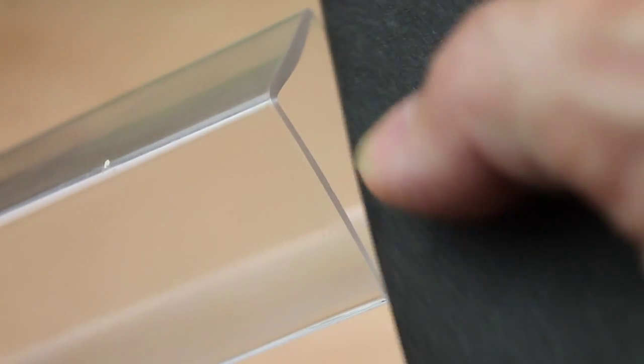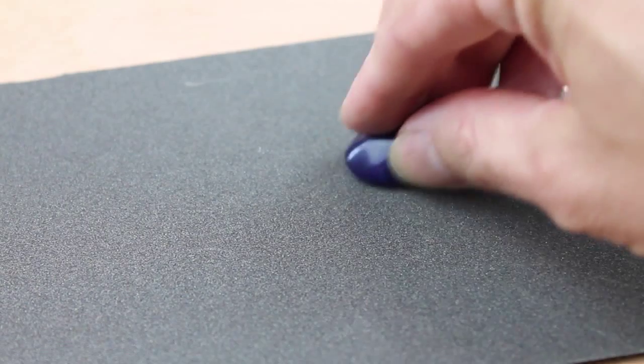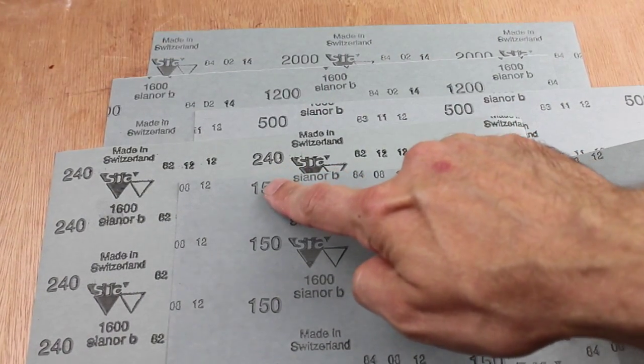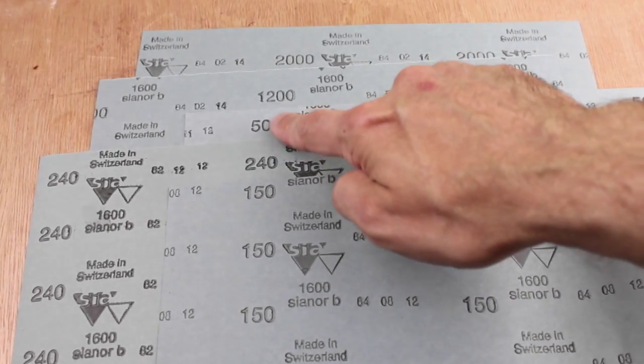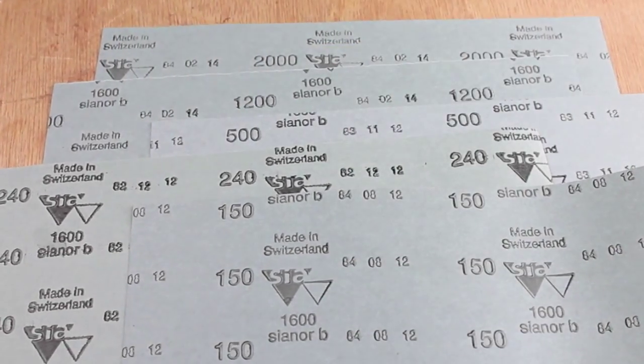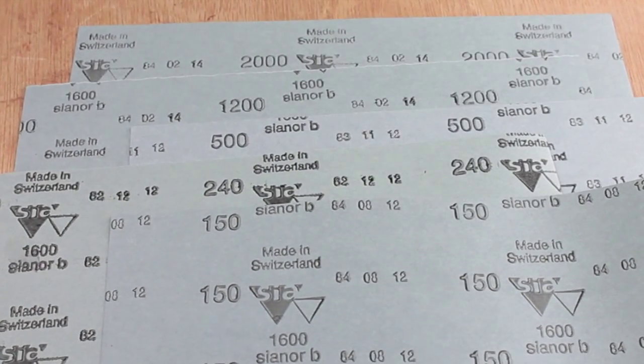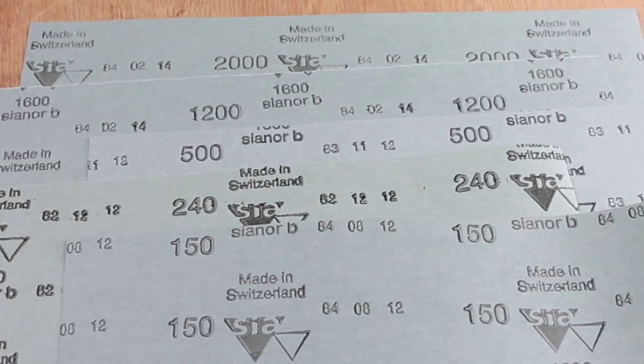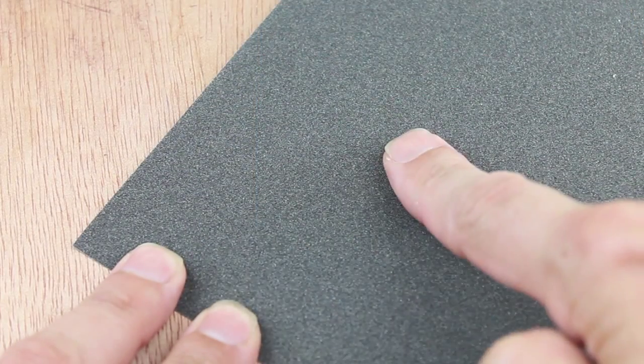The numbers refer to the different grit sizes. Now there are two different numbering systems: one that uses numbers and one that uses a P followed by a number. They're not exactly a scientific match, but they're almost identical enough for our purposes. So if you bought a 40 grit emery paper from one store and then a P40 from another store, they would